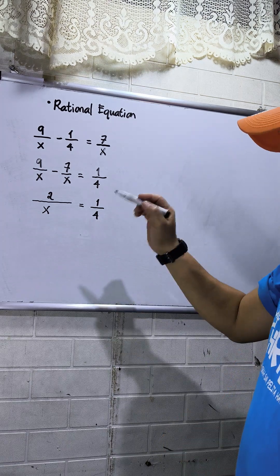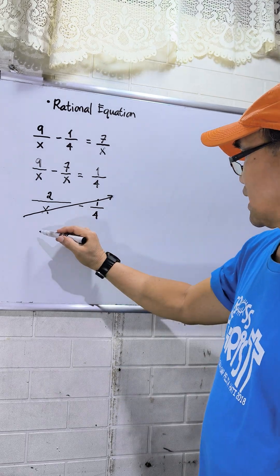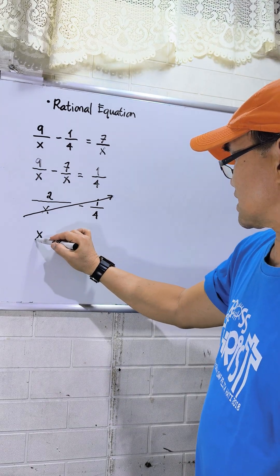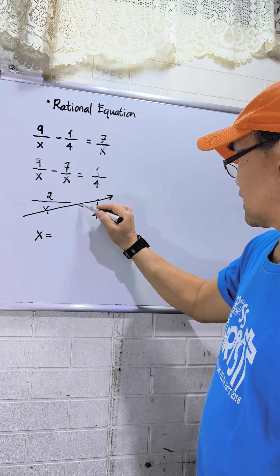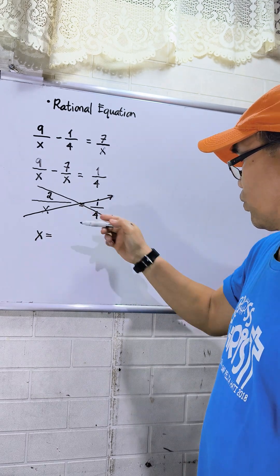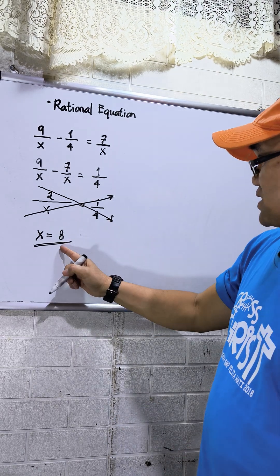Okay, to solve the value of x, cross multiplication or cross multiply. So that will be x. Then take note, this is equal. Then cross multiply also. So 2 times 4, that is 8. So this is now the value of x.